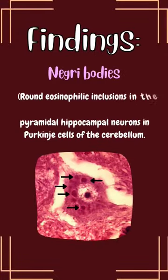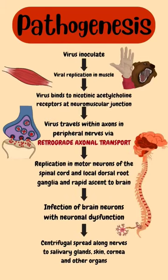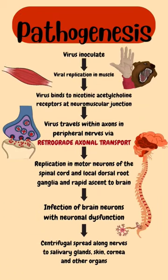It is diagnosed by Negri body. Pathogenesis is by the virus being inoculated, with replication in muscles. The virus binds to nicotinic acetylcholine receptors at the neuromuscular junction, then travels to peripheral nerves. Replication is done in motor neurons of the spinal cord and the local dorsal root ganglia, and rapid ascent to the brain.